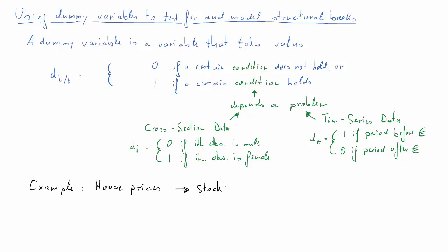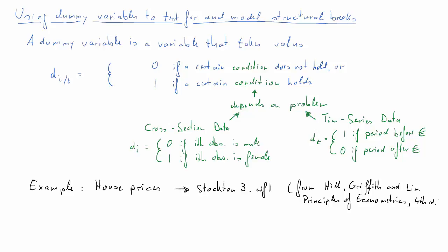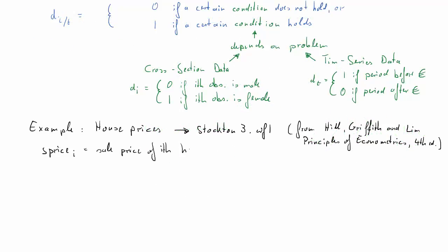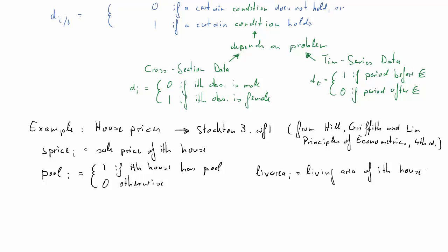The data file is an EViews file, Stockton3 WF1, from the Hill, Griffith and Lim book, Principles of Econometrics, 4th edition. You can find it on the support website for that textbook. The variables we are using are: price (sale price of the house), a pool dummy variable — equal to 1 if the house has a pool, 0 otherwise — and living area i, which measures the living area of the house.